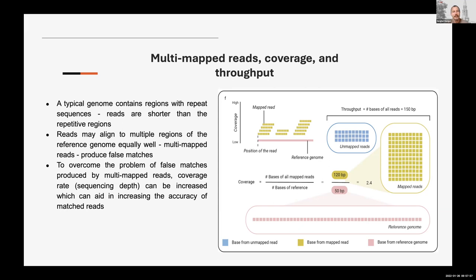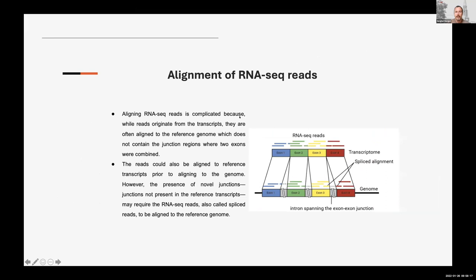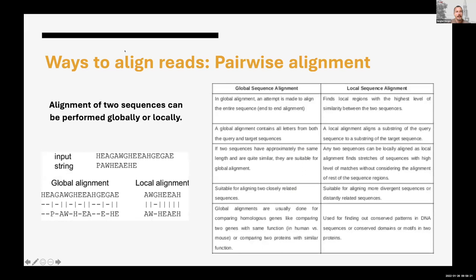Those are fundamental definitions when reading literature about sequencing — they'll mention mapped reads, throughput, coverage, and so on. Read alignment is a very classical bioinformatics problem: aligning two sequences — a very long one (the human genome) and a very short one (the read). Global alignment means mapping from beginning to end; local alignment means finding a region in the long sequence where the short sequence matches. Local alignment is more relevant here, as we want to find where in the genome a particular read matches.